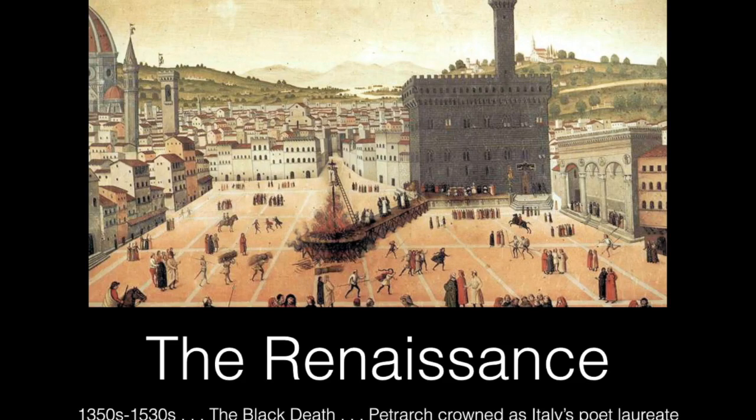Hello there, and today we're going to be looking at the Renaissance, a period of incredible cultural and artistic flourishing taking place on the Italian peninsula roughly from the 1350s to the 1530s, anywhere from the end of the Black Death in 1351. It also includes Petrarch being crowned as Italy's Poet Laureate in 1341 to Charles V's sack of Rome in 1527, perhaps even to Michelangelo's death in 1564.